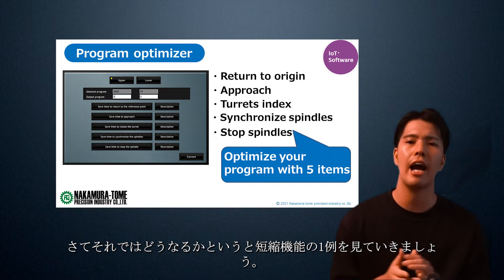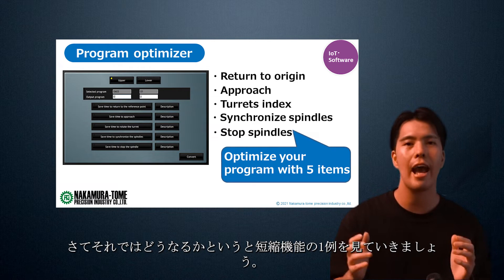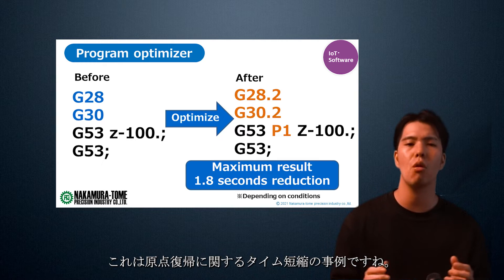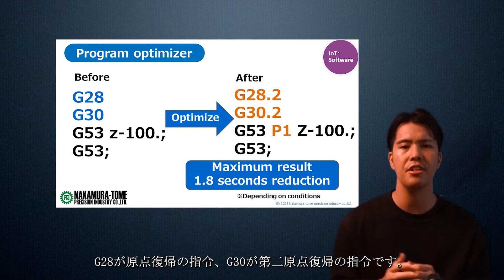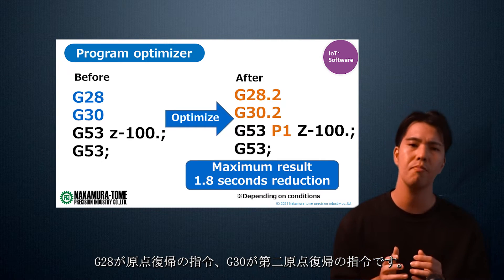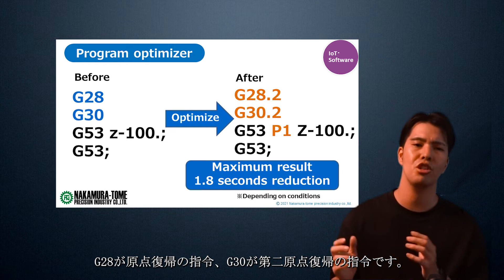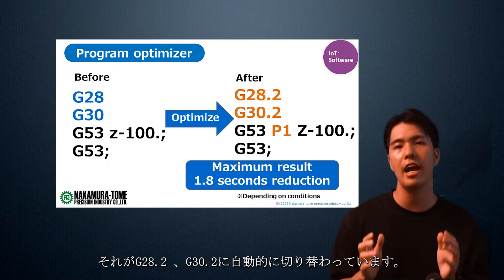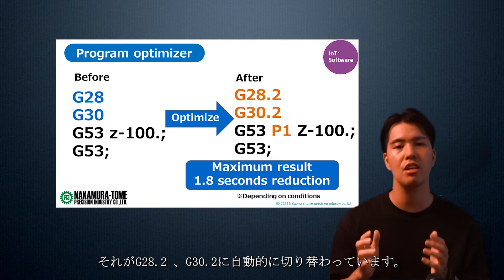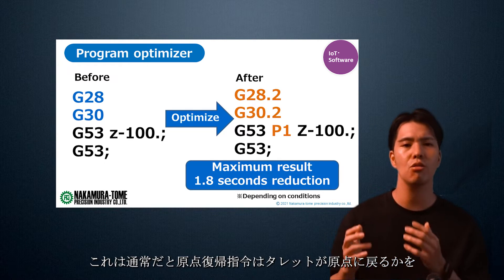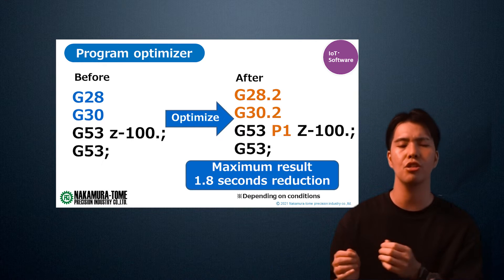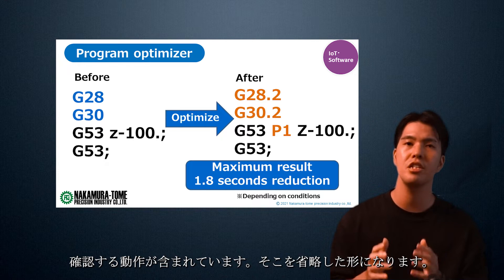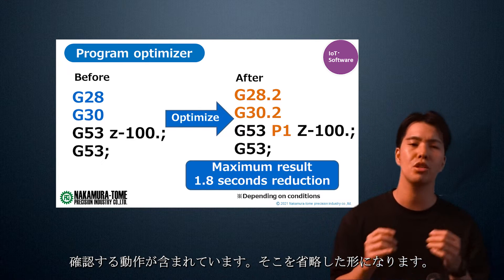Let's take a look at an example of the function to see what happens. This is an example of time reduction for return to origin. G28A is the command for return to origin, and G30 is the command for second origin return. They are automatically switched to G28.2 and G30.2. Normally, the return to origin command includes an action check to confirm the target returns to the origin. G28.2 and G30.2 skip that check.